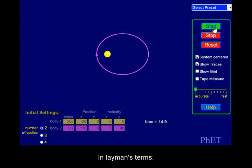In layman's terms, at aphelion the planet moves slower, at perihelion it moves faster.